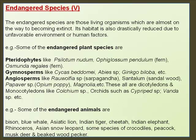Other endangered plant species include Rauvolfia serpentina (sarpagandha), Santalum (sandalwood), Papaver somniferum (opium poppy), and Magnolia among dicotyledons, and monocotyledons like Colchicum, and orchids such as Cypripedium and Vanda. Endangered animals include Bison, Blue Whale, Asiatic Lion, Indian Tiger, Cheetah, Indian Elephant, Rhinoceros, Asian Snow Leopard, some species of Crocodile, Peacock, Musk Deer, and Beaked Woodpecker.